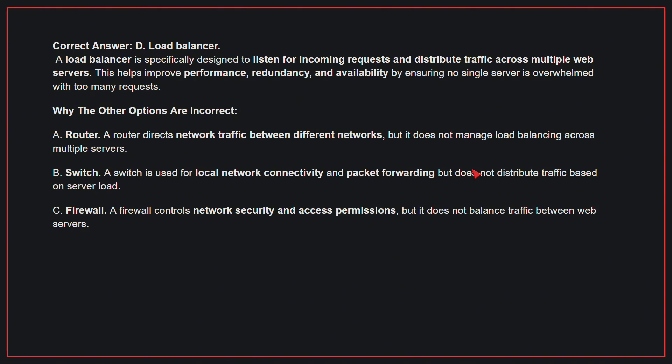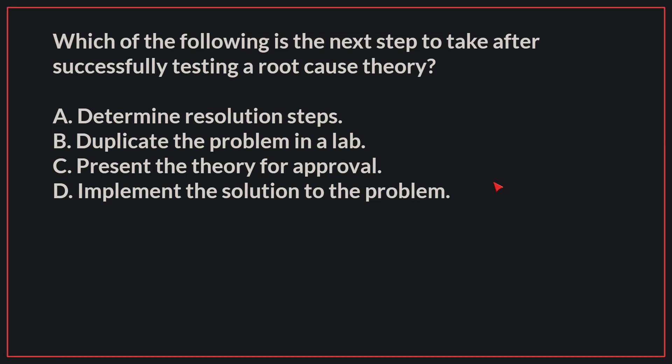Why the other options are incorrect: A, a Router directs network traffic between different networks, but does not manage load balancing across multiple servers. B, a Switch is used for local network connectivity and packet forwarding, but does not distribute traffic based on server load. C, a Firewall controls network security and access permissions, but does not balance traffic between web servers. Therefore, the correct answer is D, Load Balancer.